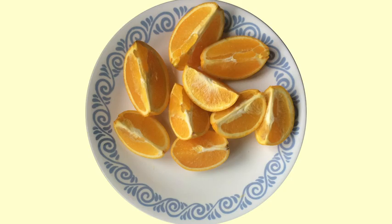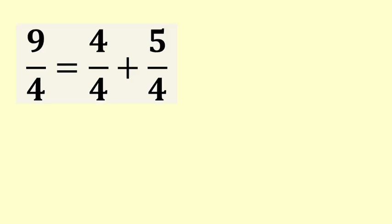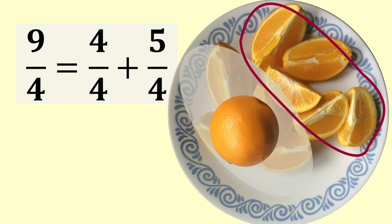Here is a picture of nine quarters of orange. Nine quarters, or nine fourths, is an improper fraction, as nine is greater than four. How might we turn that into a mixed fraction? We could say that nine quarters is the same as four quarters plus five quarters, and we know that four quarters make up a whole orange, so we can take out one orange and say that we have one plus five quarters.